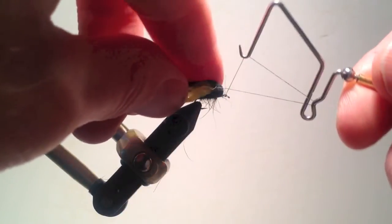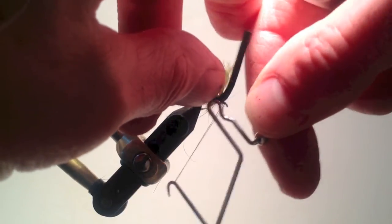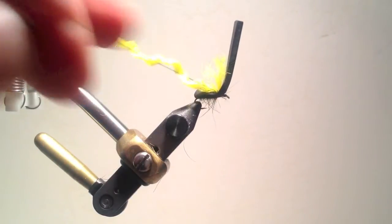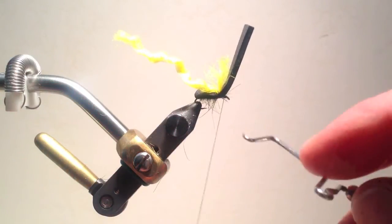You can do the final tie-off with multiple half hitches. I happen to prefer the whip finisher. Those who have watched my previous videos know that I like using the whip finisher only three times around on the first tie-off because this allows me to easily tighten the thread and get everything under control.